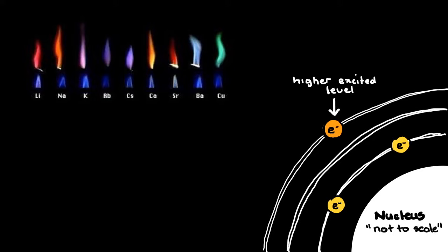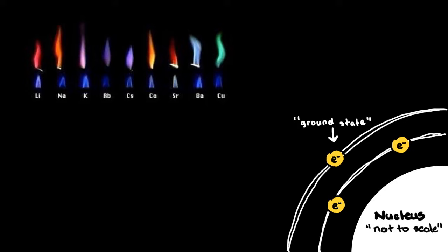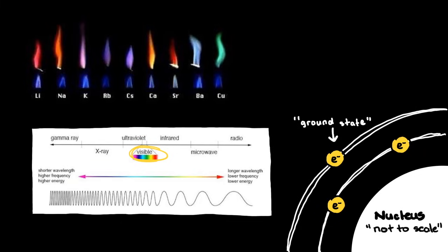Excited electrons are unstable and as they fall back to lower levels, they emit light of various characteristic frequencies. Some of these frequencies correspond to the visible region of the electromagnetic spectrum. We see the result of the emission of these colored photons.